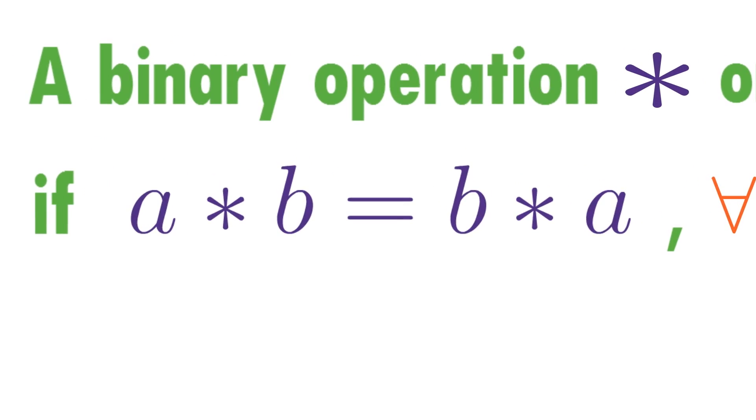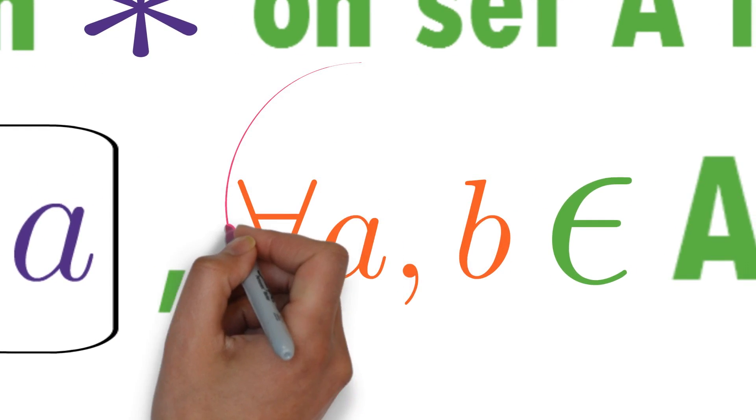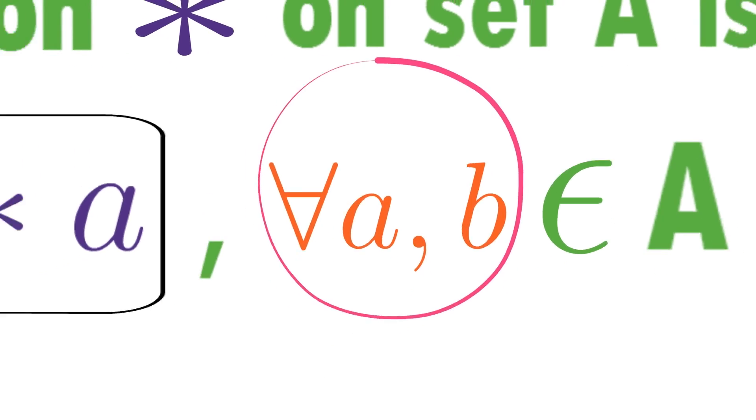Observe these things here. A star B equals B star A for every A, B belongs to A. These points are important in this definition.